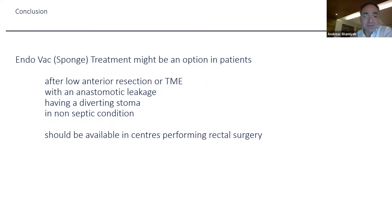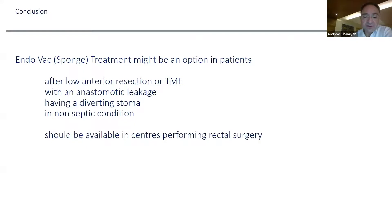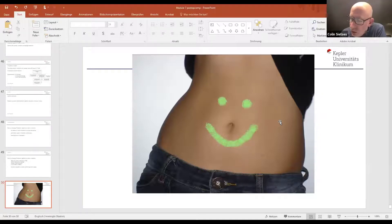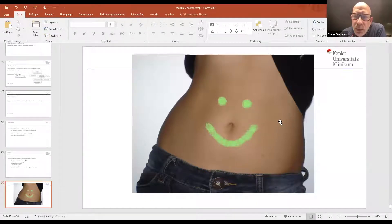In conclusion, endosponge may be an option in patients after low anterior resection or TME with anastomotic leakage — low leakage, with a diverting stoma and non-septic condition, meaning no general peritonitis. In 2020, whenever you perform rectal surgery it should be standard to offer your patient this way of managing their problem. A question was raised: should you always do a Hartmann's procedure because failure-to-rescue risk is lowest, and your primary aim should be to save the patient not the anastomosis?